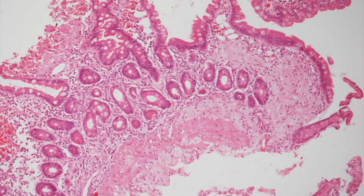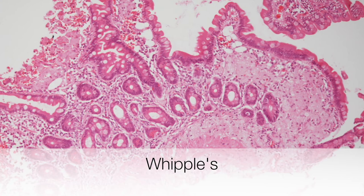This is a low power view of a small bowel biopsy of Whipple's disease, and the villi are distended and blunted by the infiltrate of foamy histiocytes.